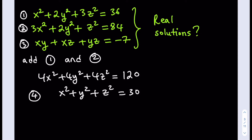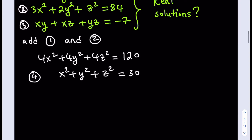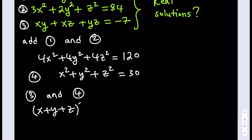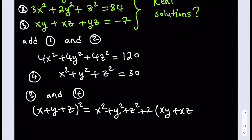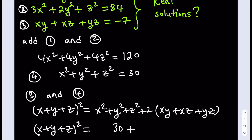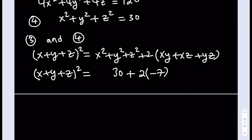Now we have four equations. Since we know x squared plus y squared plus z squared, we can use equations 3 and 4 together. We're going to get the quantity x plus y plus z squared, because that equals x squared plus y squared plus z squared plus 2 times the quantity xy plus xz plus yz. So x plus y plus z quantity squared equals 30 plus 2 times negative 7, and the sum of two-way products is negative 7. That gives 30 plus 2 times negative 7 equal to 16.